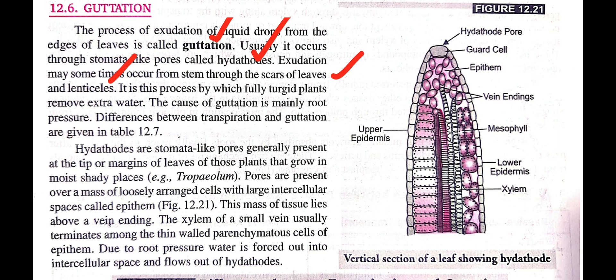through their hydathodes. The main cause of guttation is root pressure. Remember this point because it commonly appears in entrance examinations and MCQs. The main cause of guttation is root pressure. Hydathodes are stomata-like pores generally present at the tips or margins of leaves.